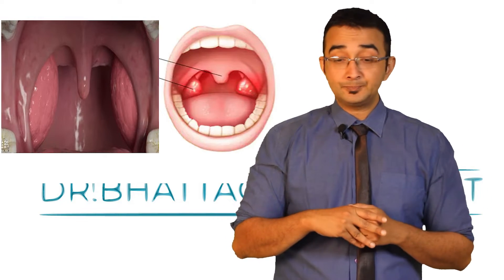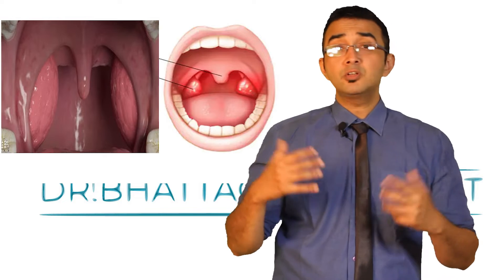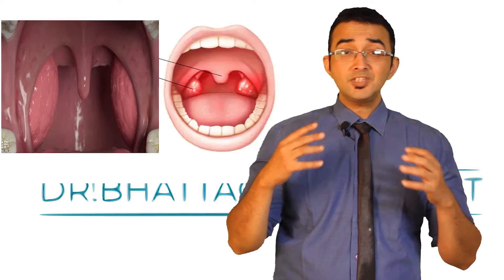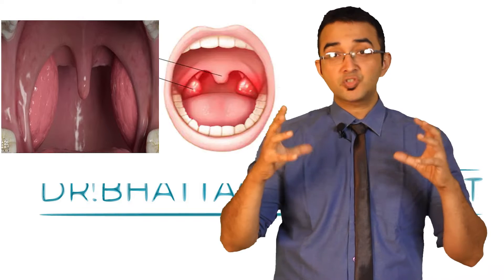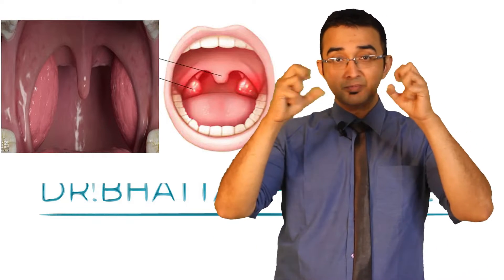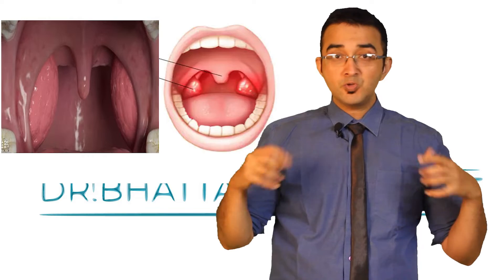What happens to the tonsils as we grow up? After the age of 18, these tonsils slowly get replaced with scar tissue, and as they get replaced with scar tissue, the tonsils become tiny and small, which is why adults usually don't have big tonsils.